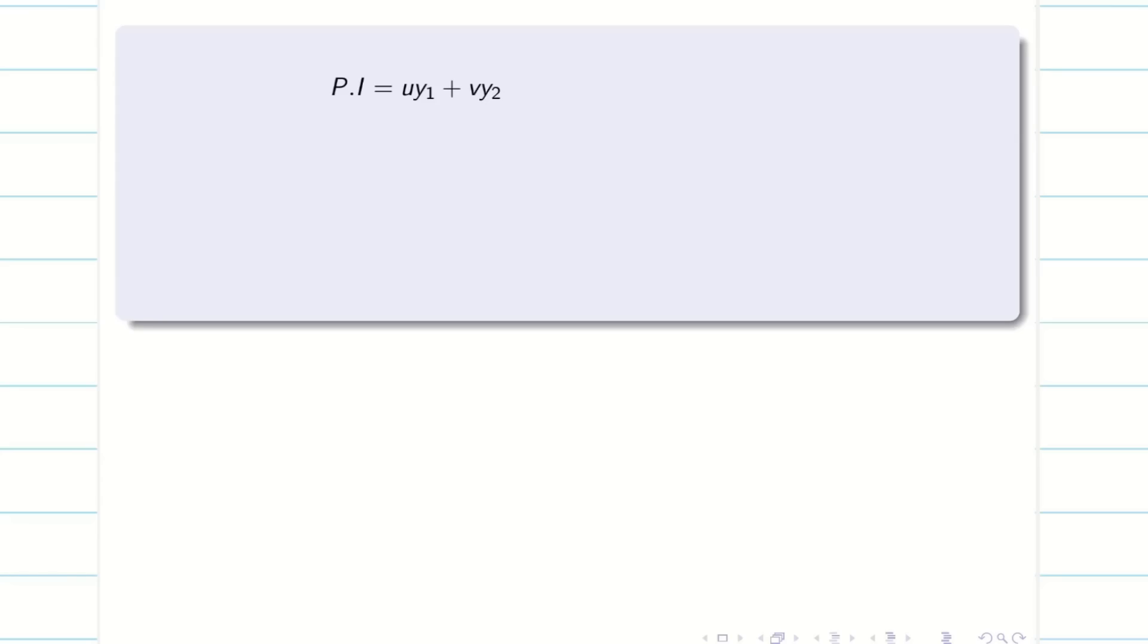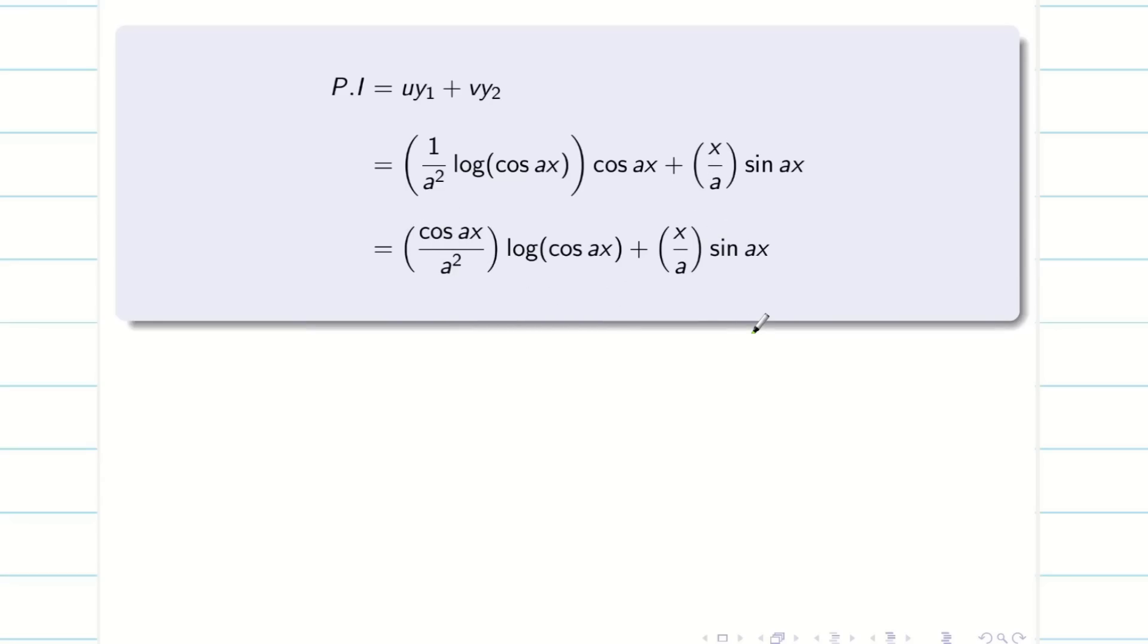Next, write my PI. That is u y₁ plus v y₂. It is very important student. Write your u in a separate bracket. Then it is easy for you to write the answer in a smooth way. And finally, simplifying this, we will be getting (cos ax)/a² log cos ax + (x/a) sin ax. Now, the general solution is CF plus PI. That is A y₁ plus B y₂ plus u y₁ plus v y₂. Write everything. The problem gets over.